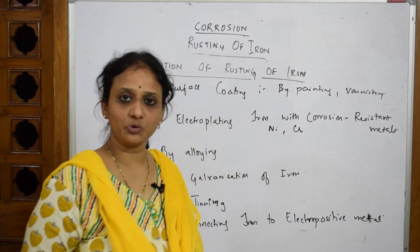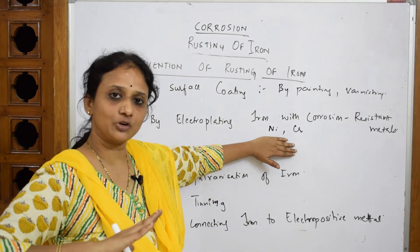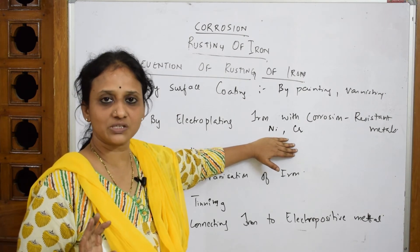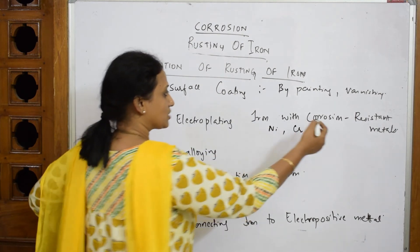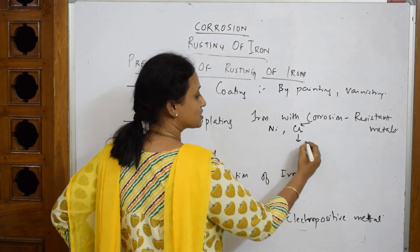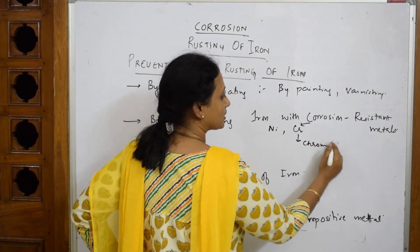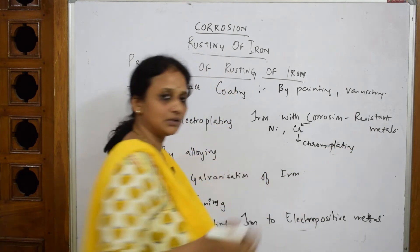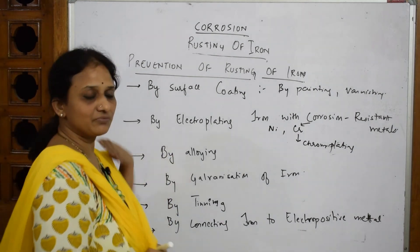The next method is electroplating iron with corrosion-resistant metals such as nickel and chromium. We apply a nickel or chromium coating on the surface of iron so it becomes less corrosive and the underlying metal is protected. Chrome plating, for example, is used on wheel rims.